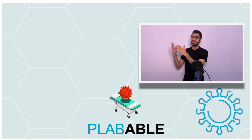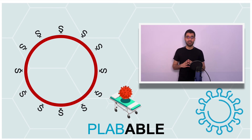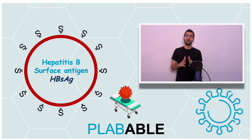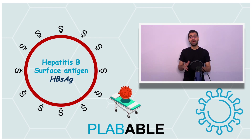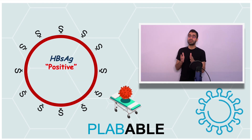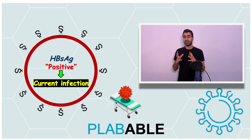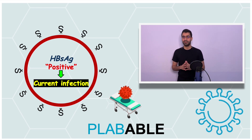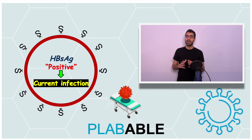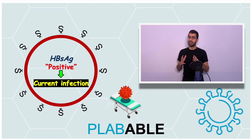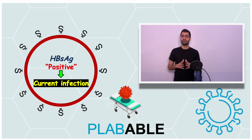What you see on the screen is the hepatitis B surface antigen, or HBsAg. It's a protein which is present on the surface of hepatitis B virus, and the presence of HBsAg indicates current infection, whether acute or chronic. It appears after 1 to 10 weeks of an acute exposure, and if it persists for more than 6 months, then it indicates a chronic infection.